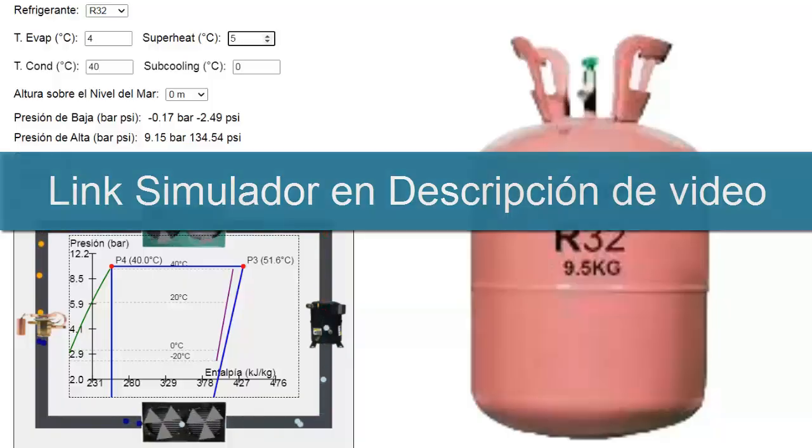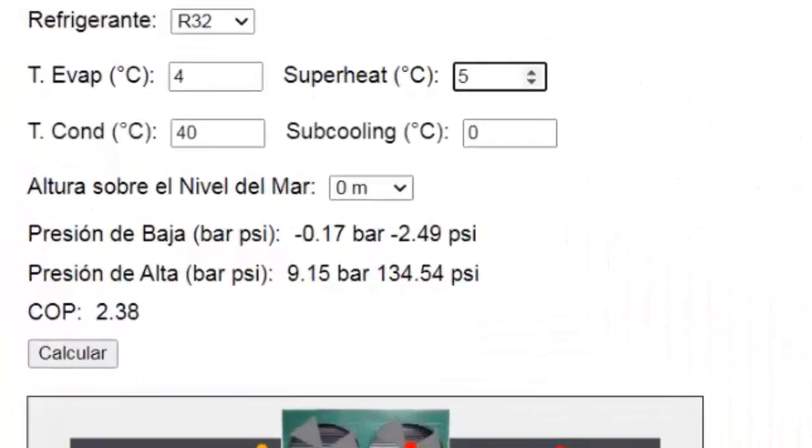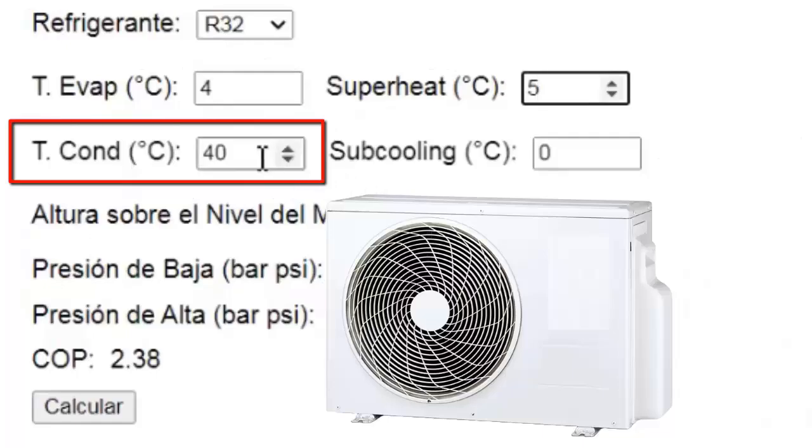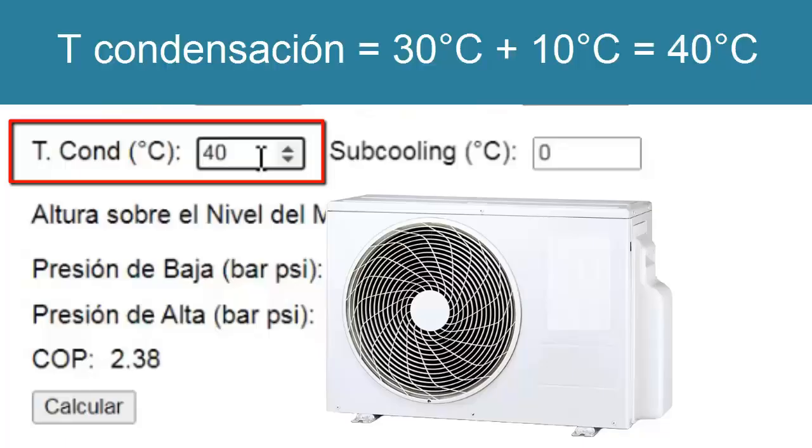Now let's focus on the condensation temperature inside the air conditioning system. To do this, we will add 10 degrees Celsius to the ambient outdoor temperature of the unit. For example, if the outdoor temperature is 30 degrees Celsius, the condensation temperature will be 40 degrees Celsius. By the way, the link to access this simulator is provided in the video description.